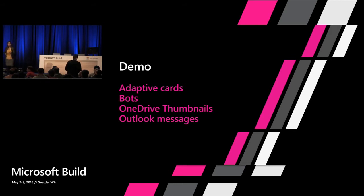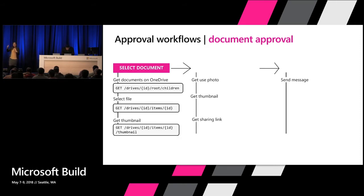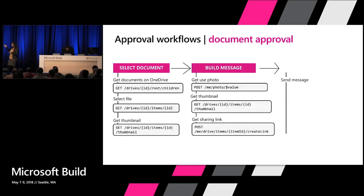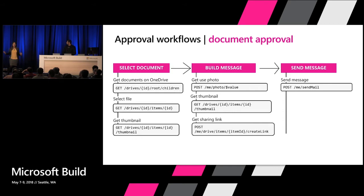We're going to see this demo all together — profile picture, thumbnails, and adaptive cards. The scenario is selecting a document in OneDrive to get an approval. We're going to read all documents in OneDrive, select one, get a thumbnail for that document, then build an adaptive card and send that message. We'll build the message with the file information and the user's information, send it, and see it in OWA with the adaptive card. Let me introduce Abdullah, one of the engineers on the Microsoft Graph team, who's going to help us go through some of these demos.